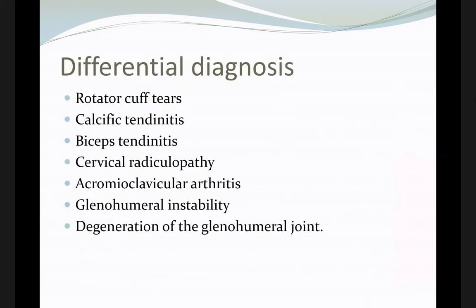Differential diagnosis can include rotator cuff tear, calcific tendinitis, biceps tendinitis, cervical radiculopathy (pressure on a cervical disc causing pain in the same area), acromioclavicular arthritis, glenohumeral instability, and degeneration of the glenohumeral joint or arthritis.